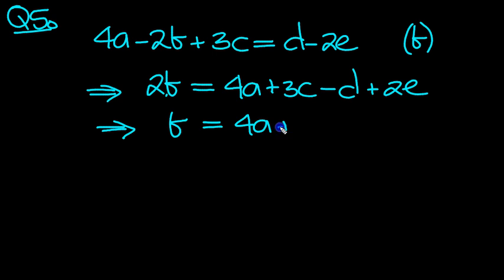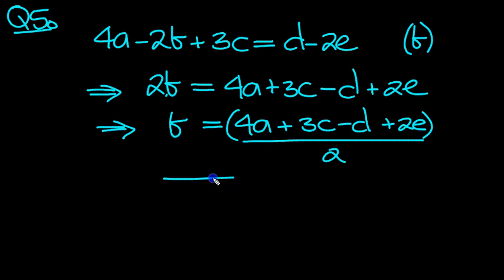On this side, the other side so to speak, there's 4A plus 3C minus D plus 2E. All of that needs to be divided by 2, doesn't it? There we go.